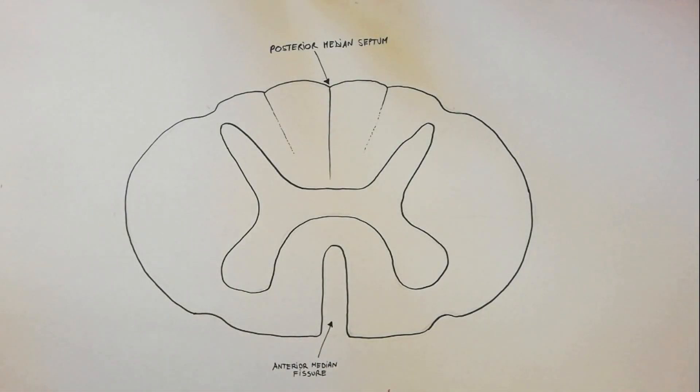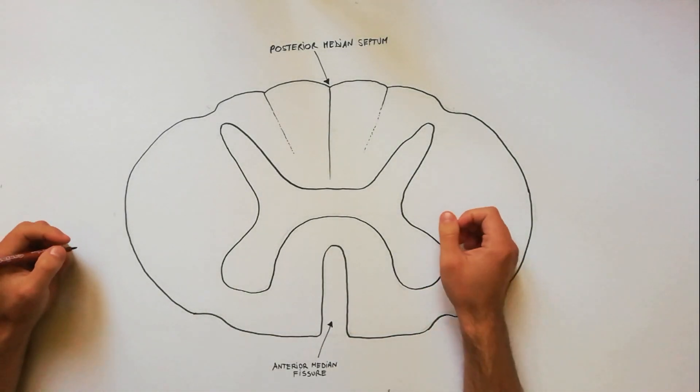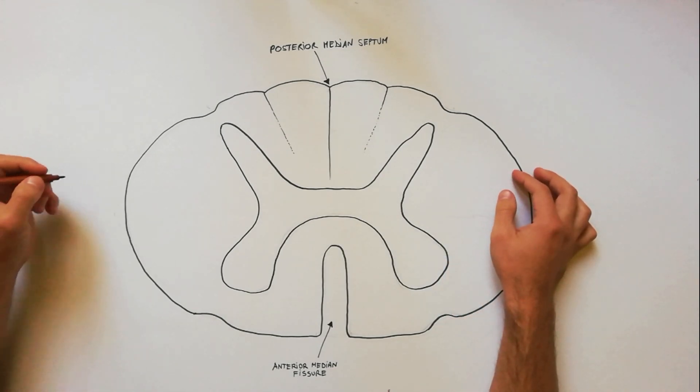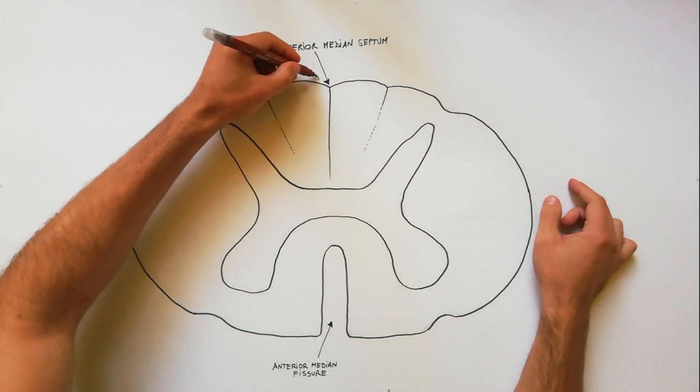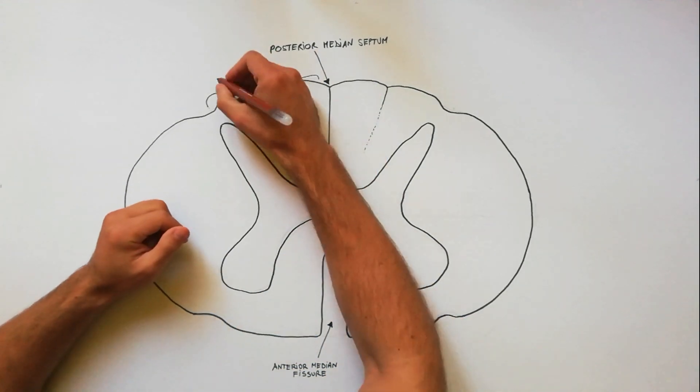In each half of the spinal cord, the white matter is divided into three parts called white columns or funiculi.